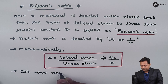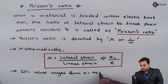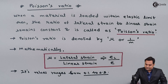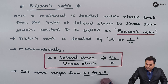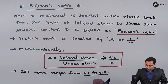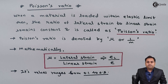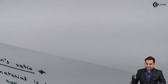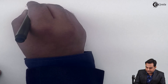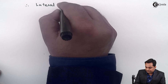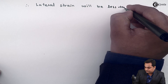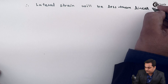The value of Poisson's ratio lies in the range 0.1 to 0.5. By looking at this value, since it is less than 1, we can say that if Poisson's ratio is less than 1, it means that lateral strain will be less than linear strain.